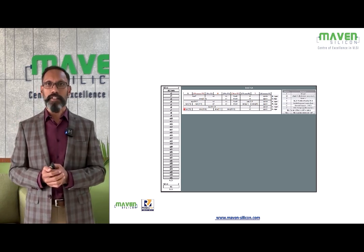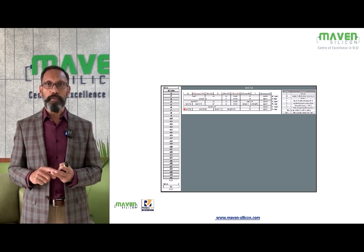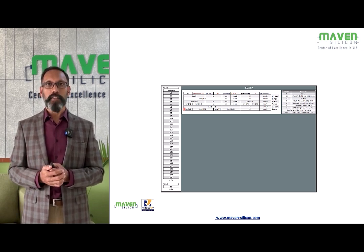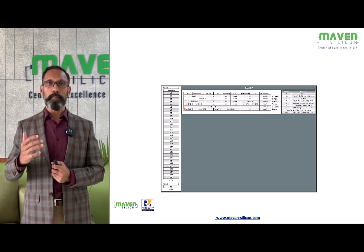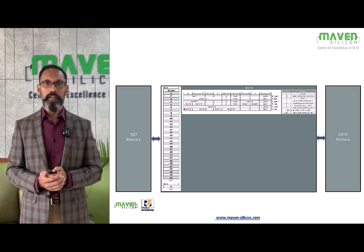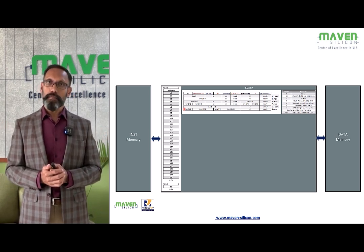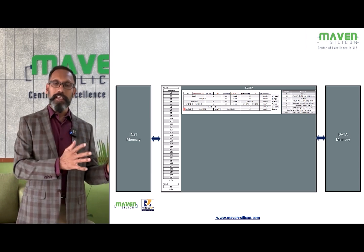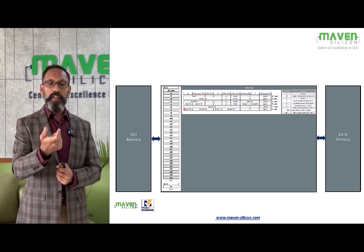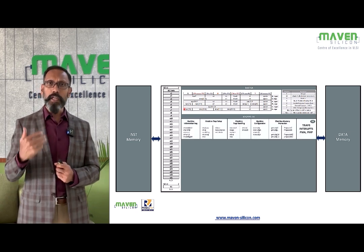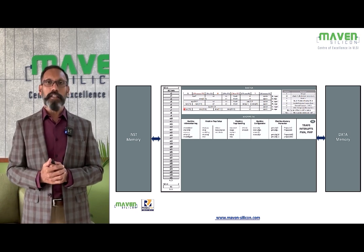There are various standard extensions available: integer, multiplication and division, single precision and double precision floating point, and compressed instructions. Users can also add their own user-defined non-standard extensions. The ISA also defines how to deal with external memories. RISC-V ISA supports both little-endian and big-endian memory systems, but for instruction fetching it always follows little-endian. To deal with big-endian memory systems, it provides privileged architecture.